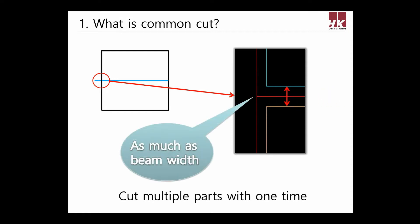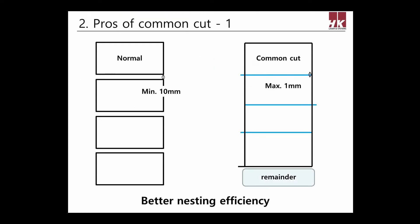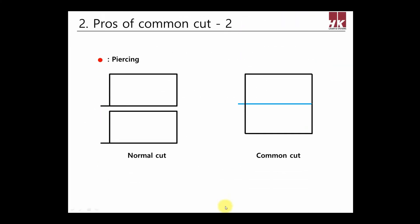Common cut has many pros. First, nesting efficiency will rise because nesting parts with common cut can nest parts with more density rather than normal nesting. Second, there is an advantage of time savings due to decreased piercing.